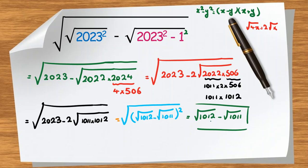Pay attention: sometimes you might write the square root of 1011 minus the square root of 1012, but if you consider the absolute value, the result must be non-negative, so the correct form is the square root of 1012 minus the square root of 1011.